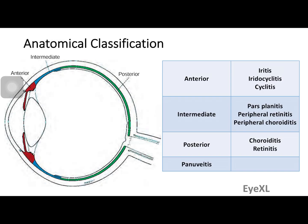If the patient has anterior uveitis, I would classify it as iritis, iridocyclitis, or only cyclitis. Cyclitis refers to the ciliary body. The most common is iridocyclitis, because the iris and the ciliary body are one continuous structure — if one gets affected, the other will naturally also be affected.